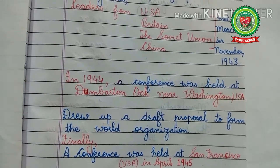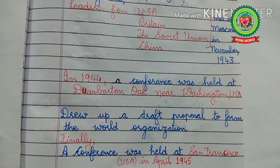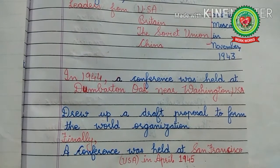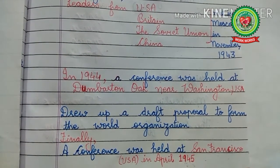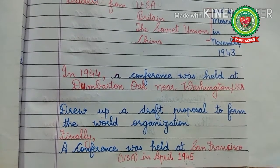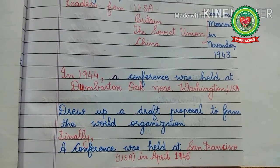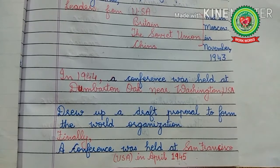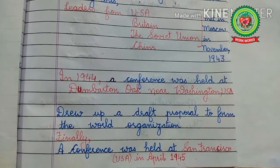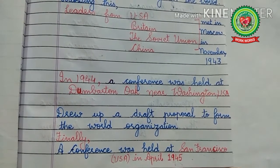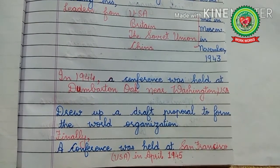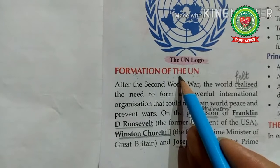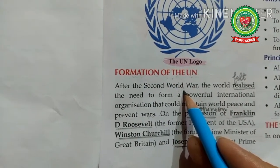Finally, a conference of 50 nations was held at San Francisco, USA, in April 1945, where the Charter of the United Nations was prepared. The charter is an official document describing rules and regulations. Only Poland didn't send a representative as there was no recognizable government there at the time. The charter was signed by 51 nations, including India. On October 24, 1945, the United Nations came into existence, and every year October 24 is celebrated as UN Day all over the world.